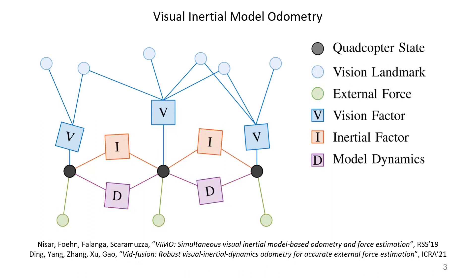State-of-the-art Visual Inertial Model Odometry systems extend the VIO formulation by adding a factor that represents the motion prior from the robot dynamics and a state that represents the external force.